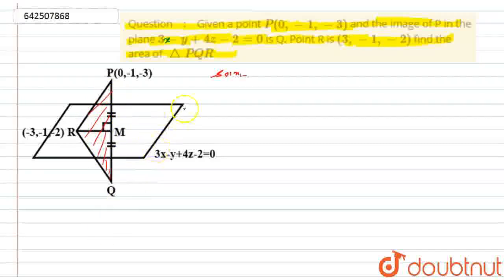Now if I consider, this is nothing but a plane whose equation is 3x - y + 4z - 2 = 0. So if I will join this R to M, this will be perpendicular to this PQ. While, as Q is the image of P, so this Q will be at same distance from M as the P from M. So in that case, I can say that PM will be equal to MQ.